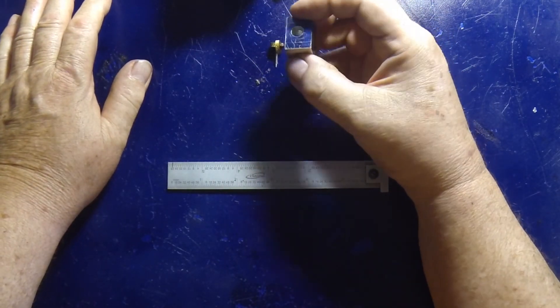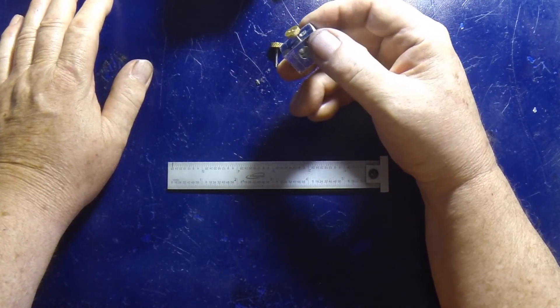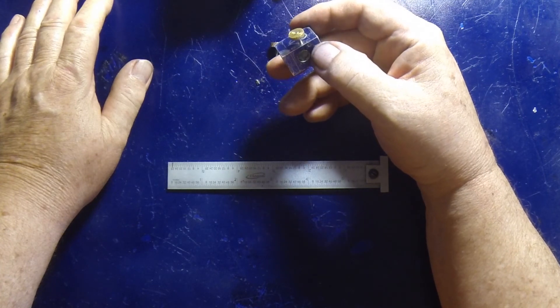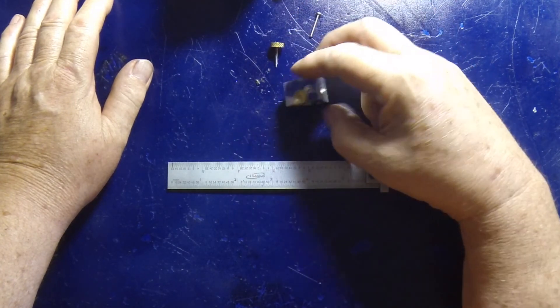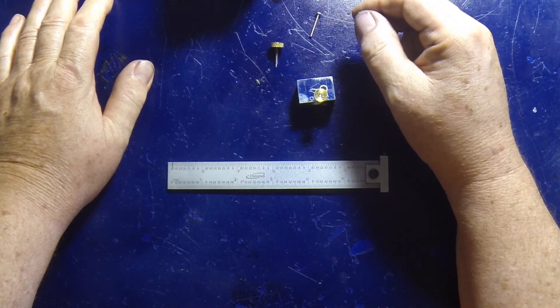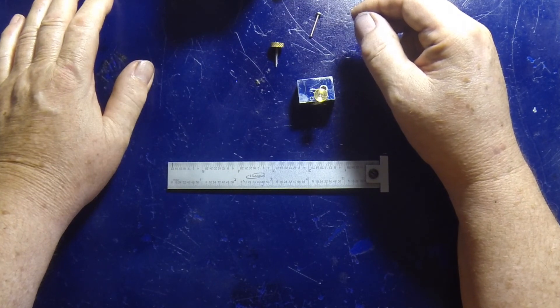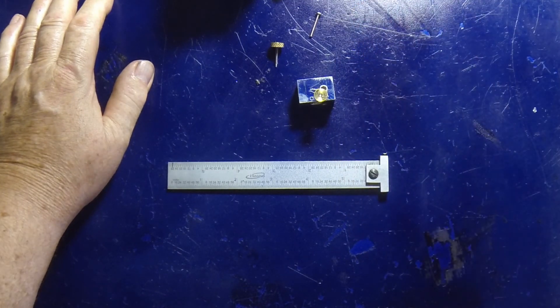So that's the adjustment screws for the carburetor. And we'll mark off one more step. Thanks for watching.